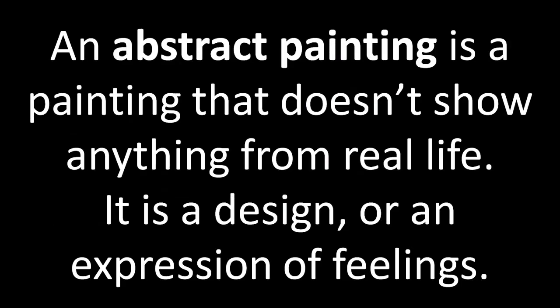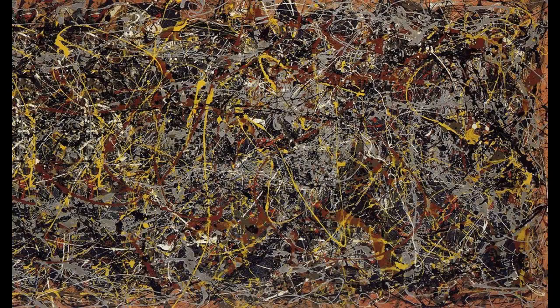An abstract painting is a painting that doesn't show anything from real life — it is a design or an expression of feelings. This is an abstract painting by Jackson Pollock, simply called Number 5. This abstract painting is called Carnival of Harlequin by Joan Miró.